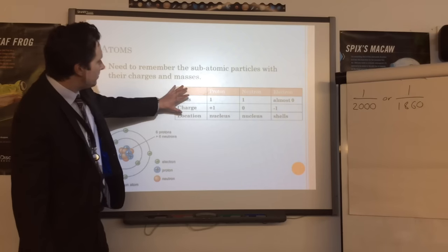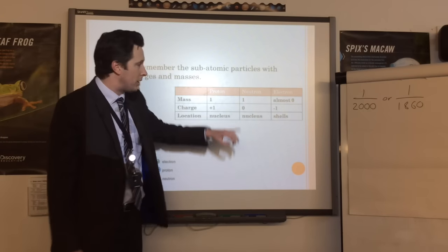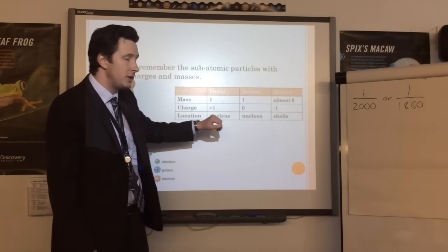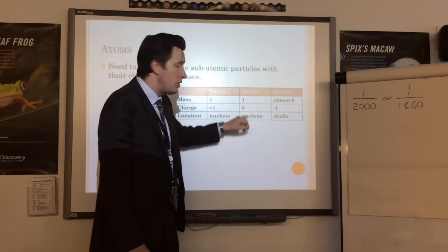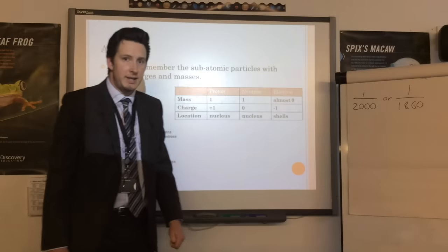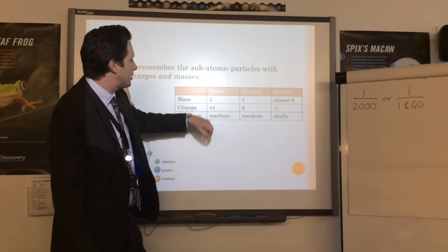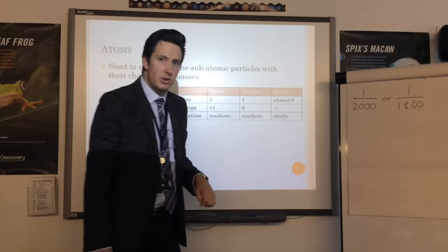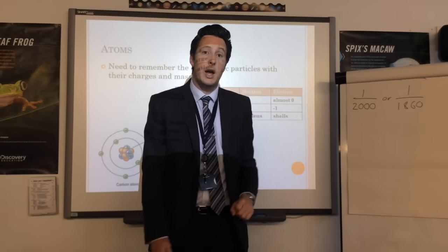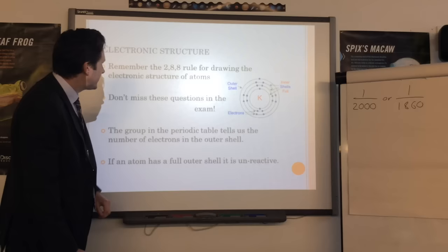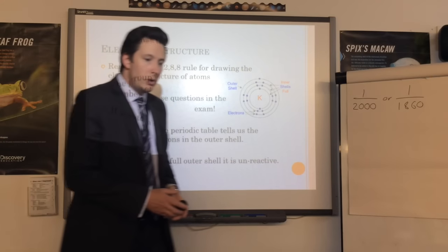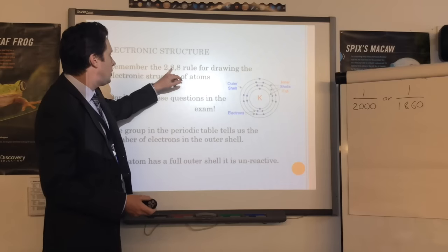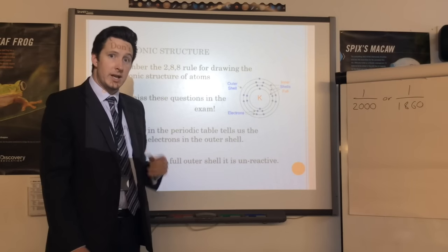So we know the subatomic particles: protons, neutrons, electrons. Protons are positive, neutrons are neutral, electrons are negative. Their masses: protons mass one, neutrons mass one, electrons almost zero. They're arranged as described, and that leads on to electronic structure. The most important thing for electronic structure is the 2-8-8 rule for drawing it.